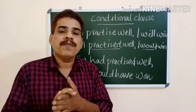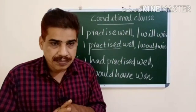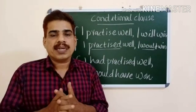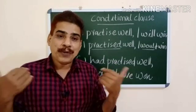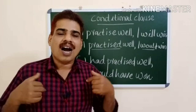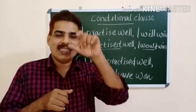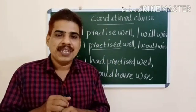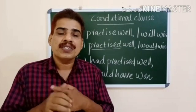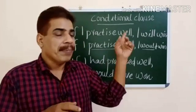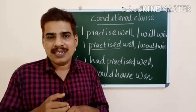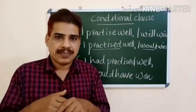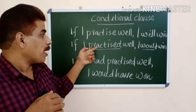One more example: 'If I get the lottery, I will buy a car.' Another example: 'If you invite me, I will come.' In these three sentences you might have observed that we have used the first form of the verb after 'if,' and in the main clause we have used 'will.' There is only a possibility — this may or may not happen.